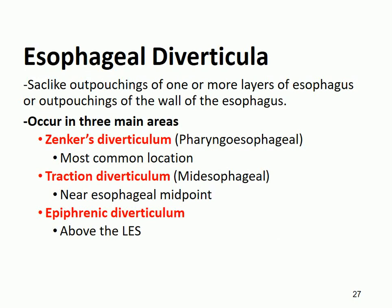One of the congenital anomalies of the esophagus is called esophageal diverticulum. The esophageal diverticulum is just like a sac-like outpouching that involves one or more layers in the esophagus — or simply put, an outpouching in the walls of the esophagus.